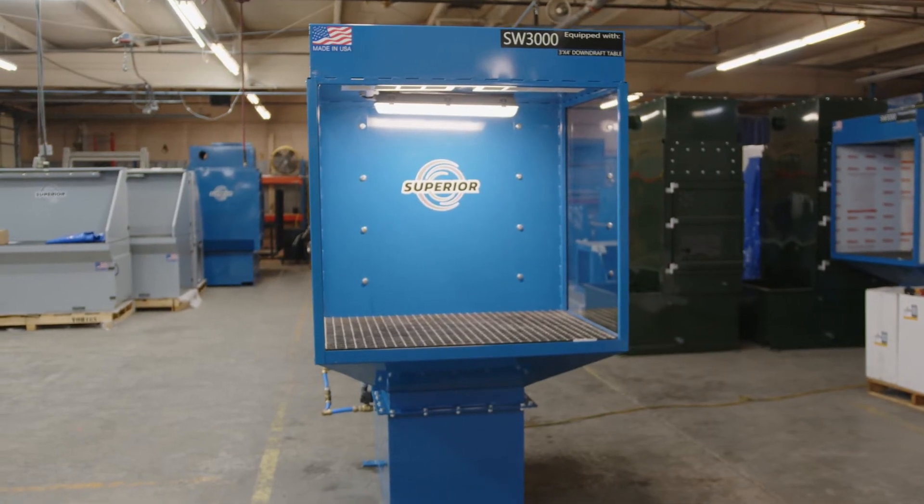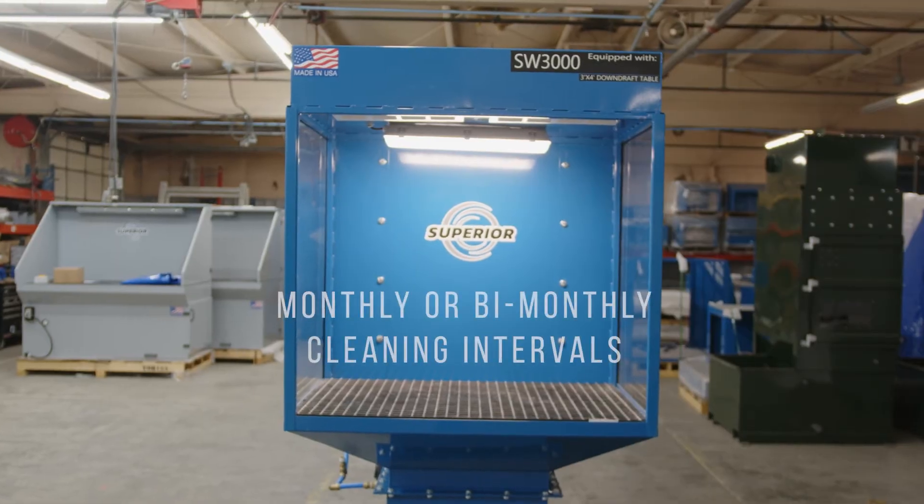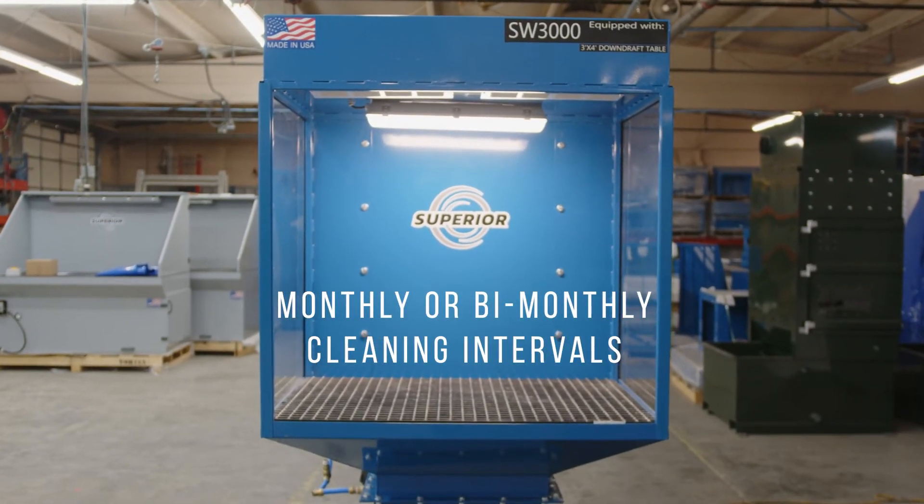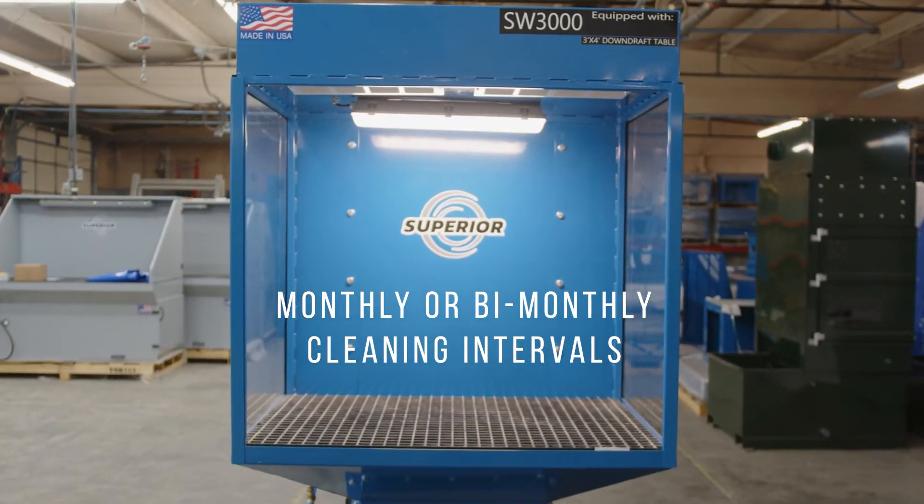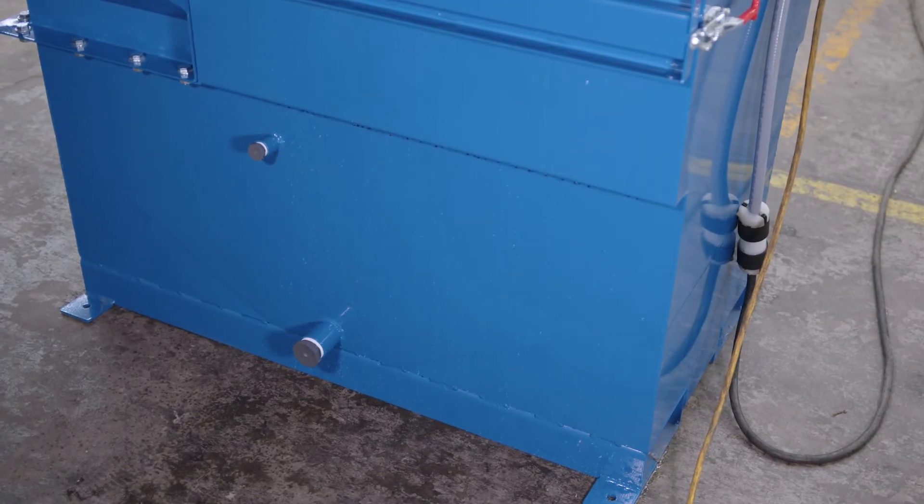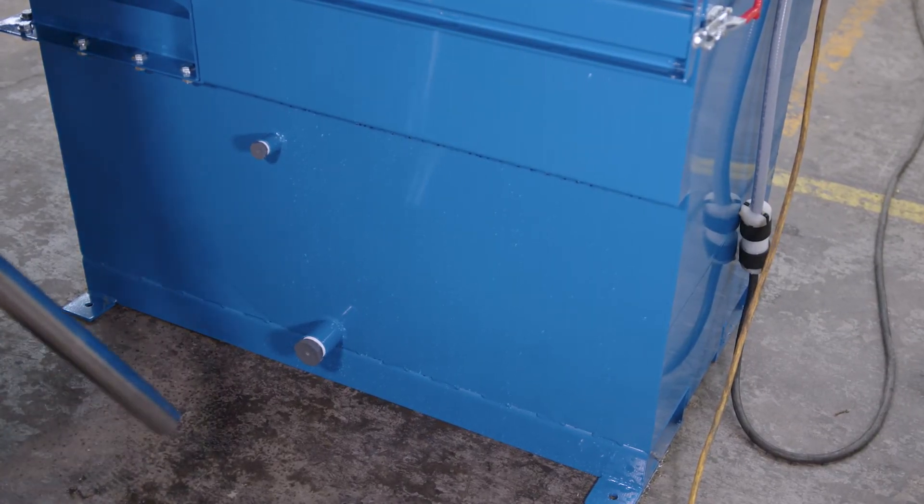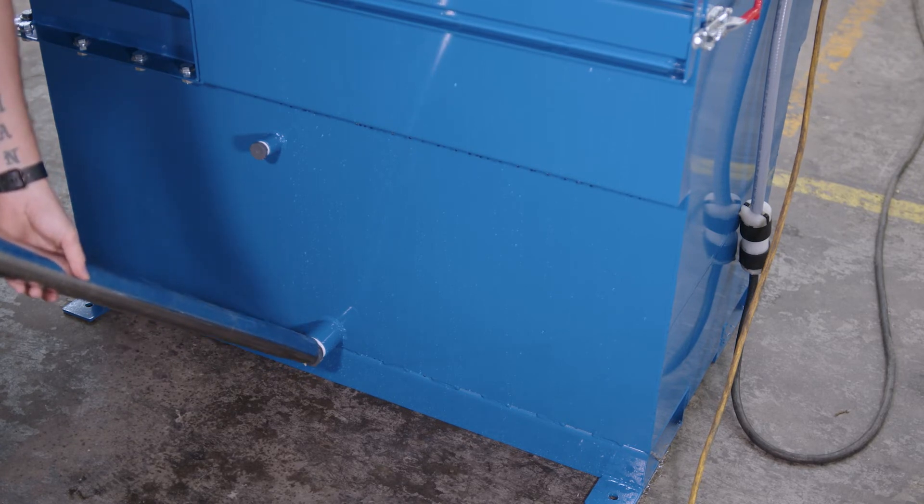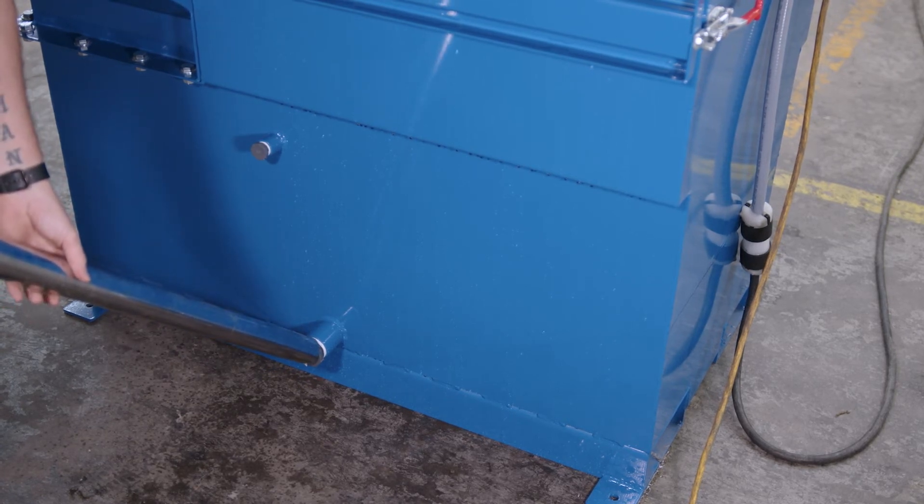Depending on usage and application, a wet collector must be cleaned out to ensure proper operation at monthly or bimonthly intervals. Most customers will use a pump to drain out the sludge collected in the water bath during operation. However, the sludge can be manually raked or scooped out as well.